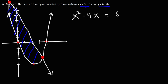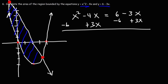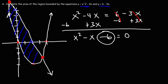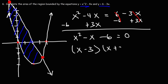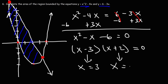Setting x squared minus 4x equal to 6 minus 3x, then rearranging: x squared minus x minus 6 equals 0. Factoring: (x minus 3)(x plus 2) equals 0. So x equals 3 and x equals negative 2 are the points of intersection. The top function f of x is 6 minus 3x (the line), and the bottom function g of x is x squared minus 4x.